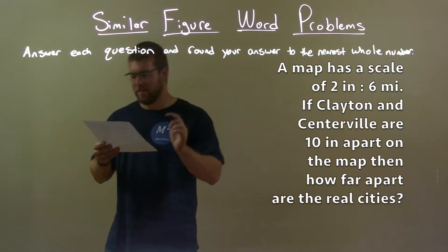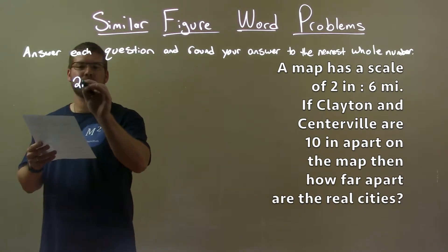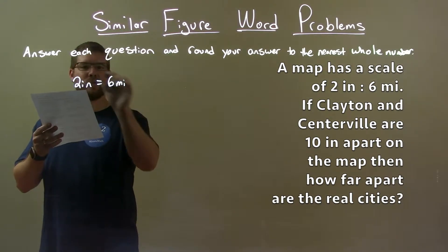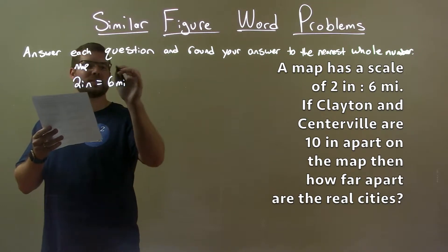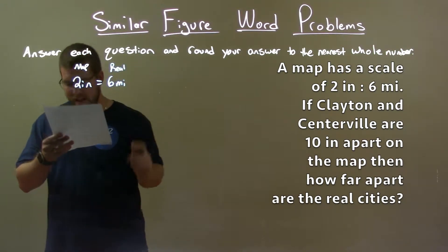So, first thing they gave us a scale: 2 inches is equal to 6 miles. That's 2 inches on the map and 6 miles in real life.